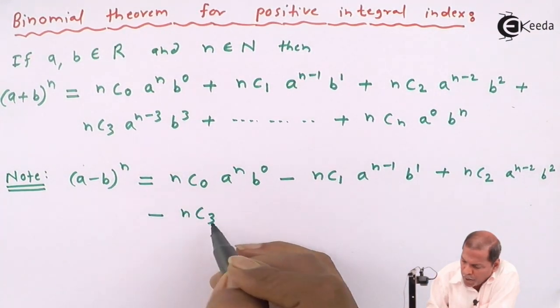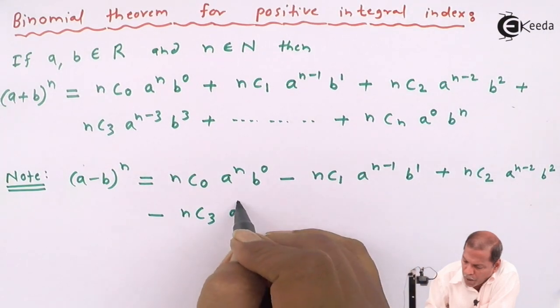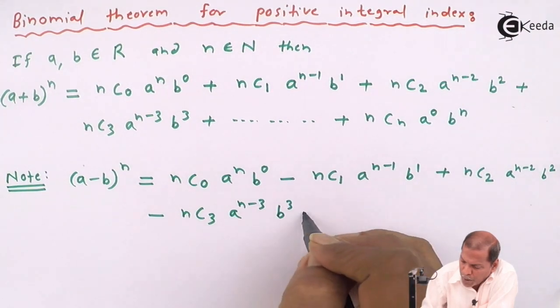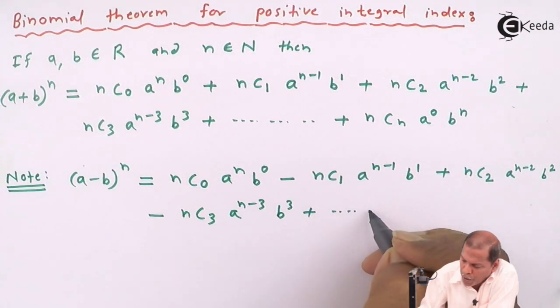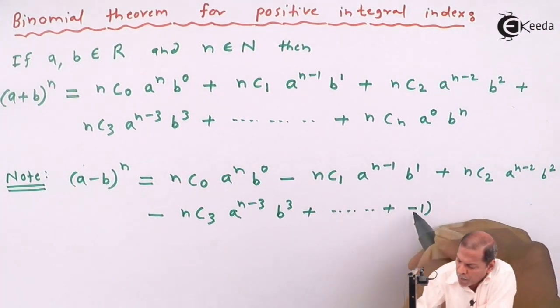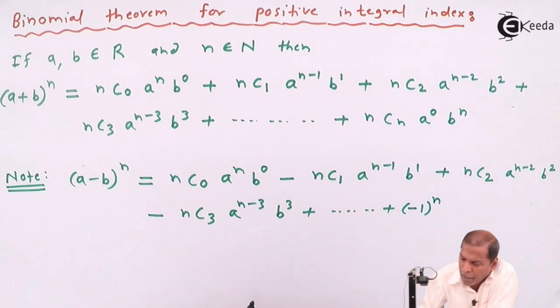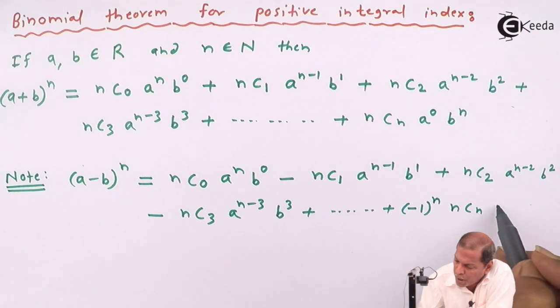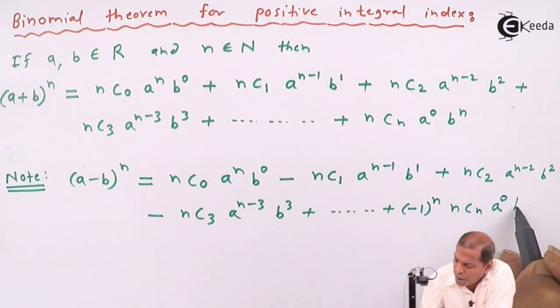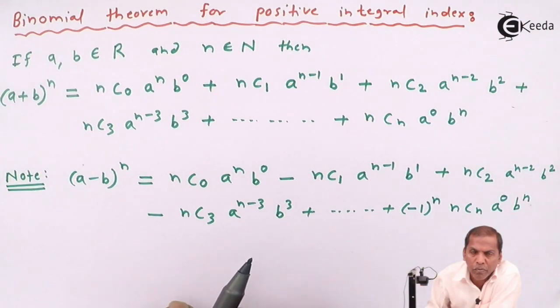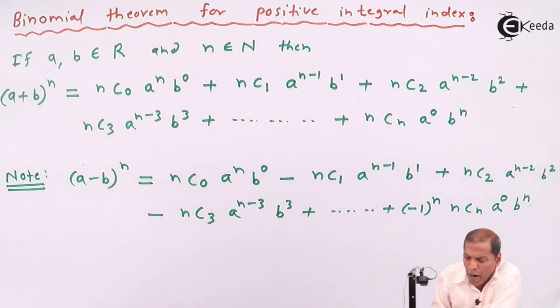...minus nC3 a^(n-3) b^3, and so on. The last term can be written as (-1)^n times nCn a^0 b^n. So this is the required expansion for (a-b)^n.